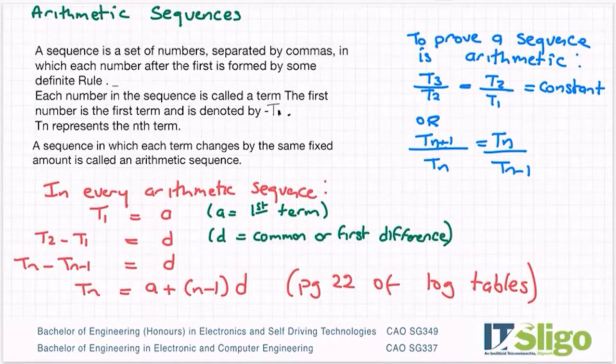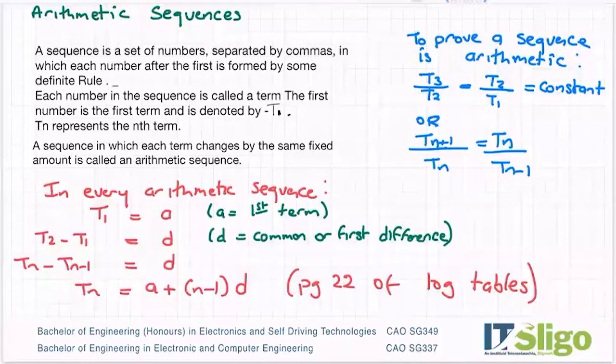So the first thing I have there is what is a sequence. It is nothing more than a set of numbers separated by commas in which each number after the first is formed by some definite rule. So there's a link between each number in the sequence.